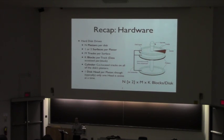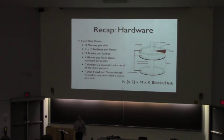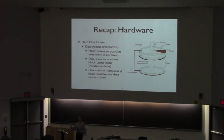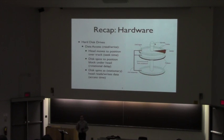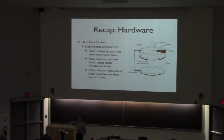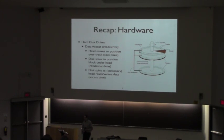Every disk surface has a disk head which reads from that surface, and while there are multiple disk heads, typically only one of them will read at any given time. In order to read from a disk, there are three costs: first, you need to move the head into the correct position above the right track — that's the seek time. The disk then spins, and it takes a fraction of a second to move the block you want under the disk head — that's rotational delay. The head stays in place as the disk continues to spin, allowing the head to read off the block — that's the access time.